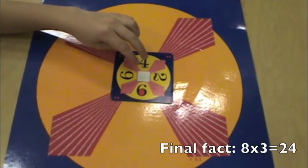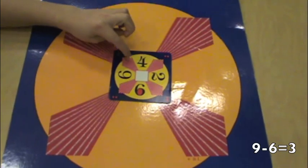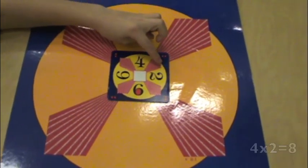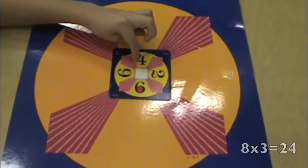8 times 3 equals 24. 9 minus 6 equals 3. 4 times 2 equals 8. 8 times 3 equals 24.